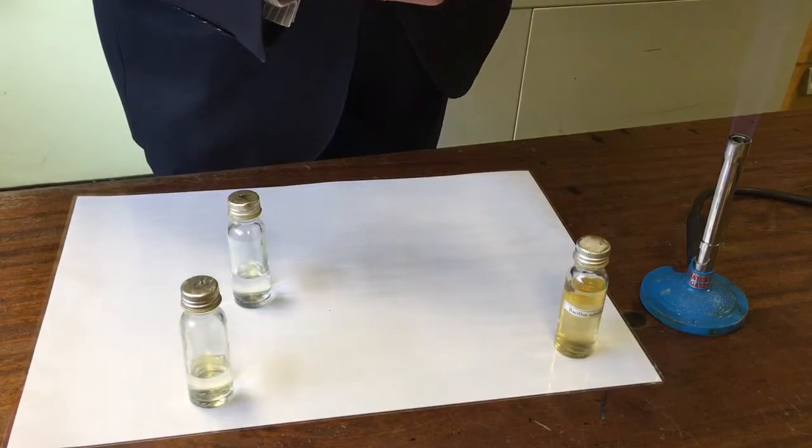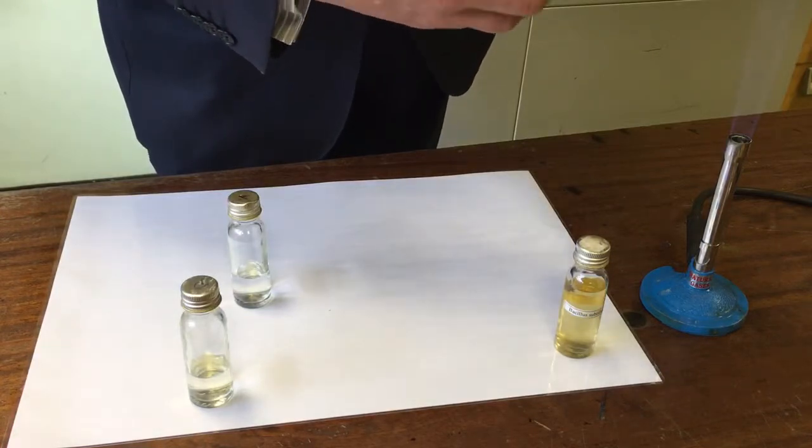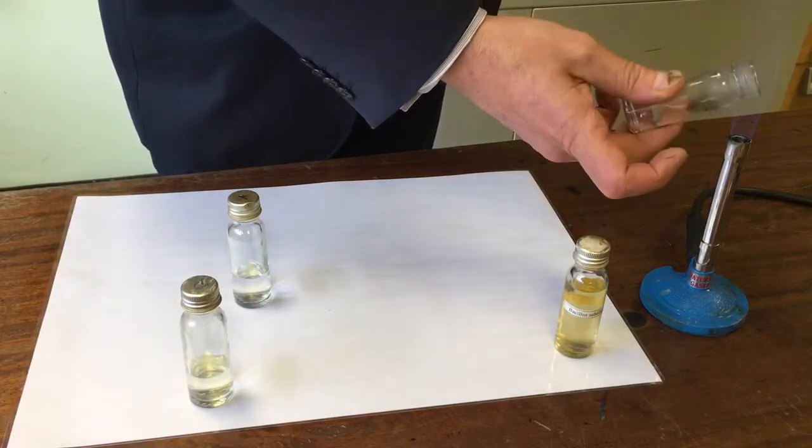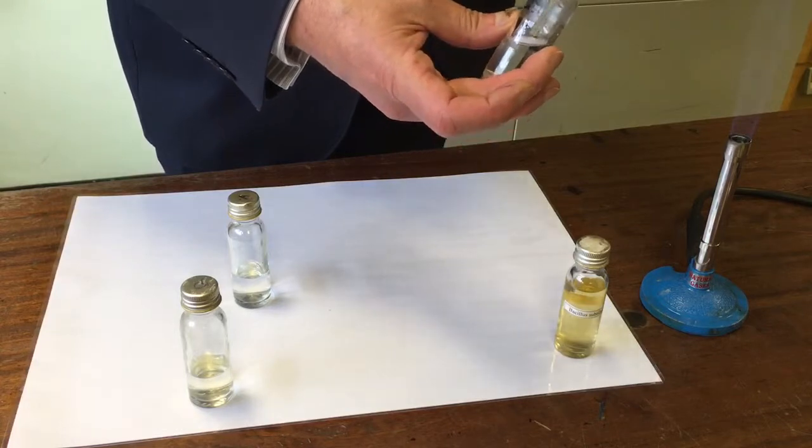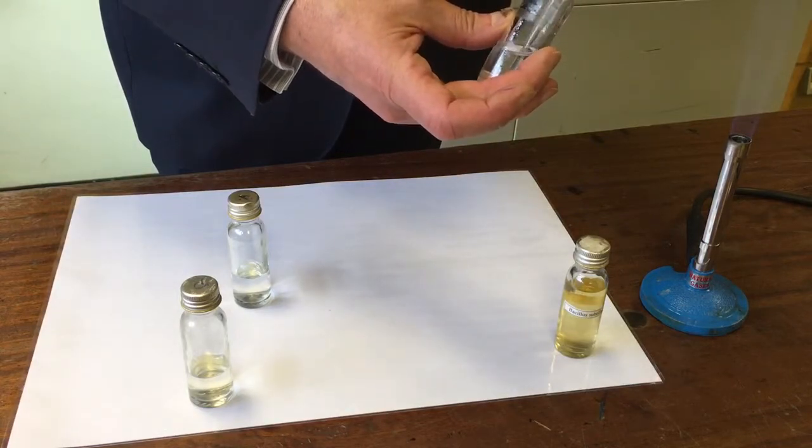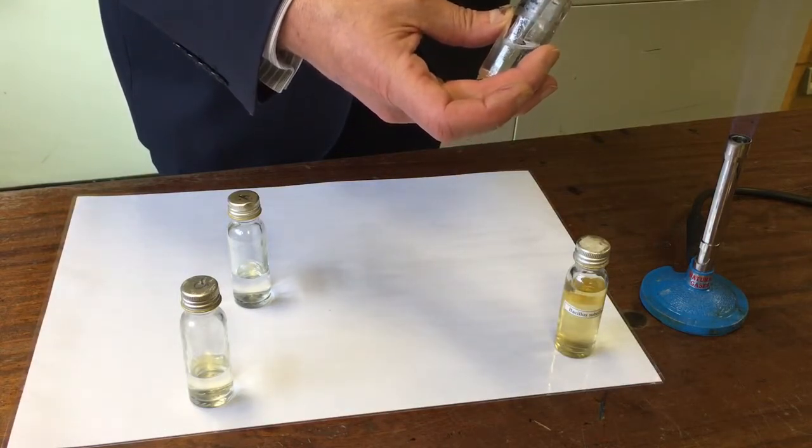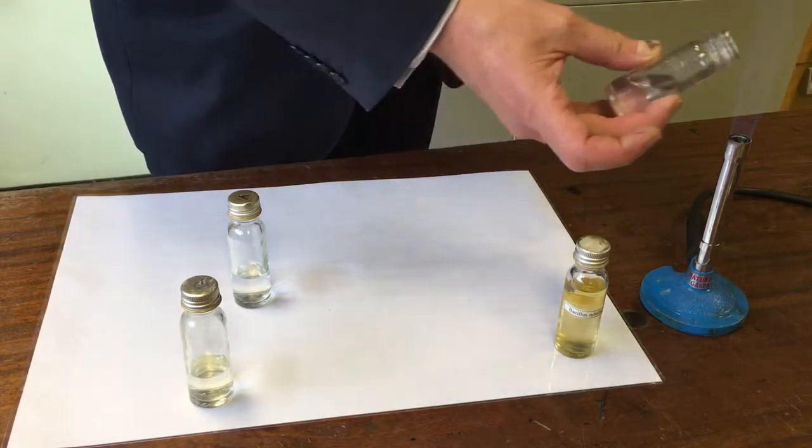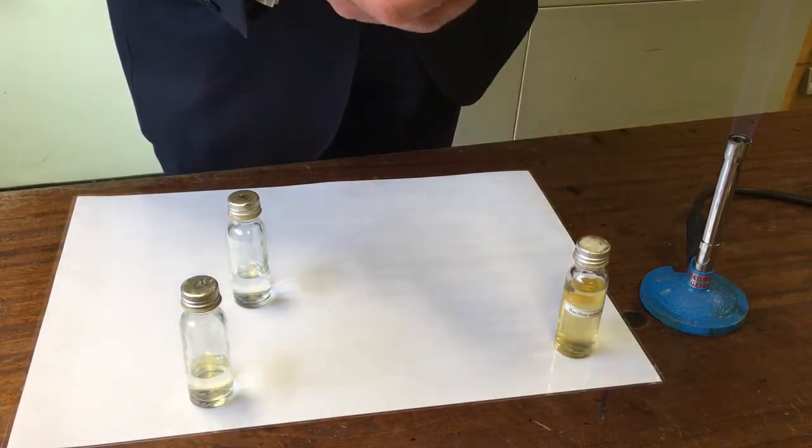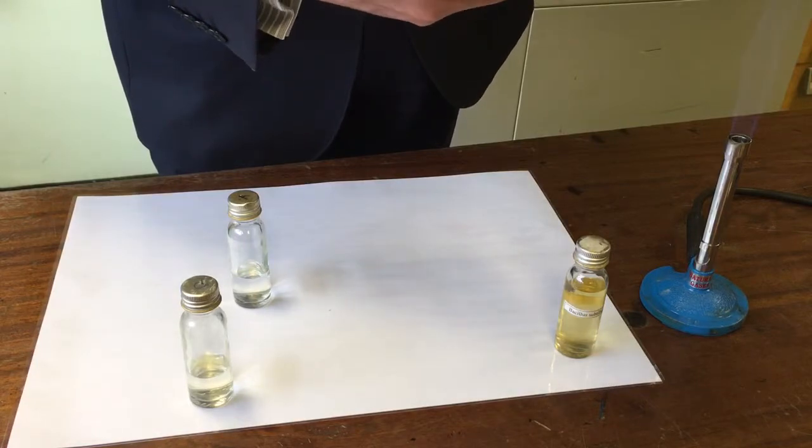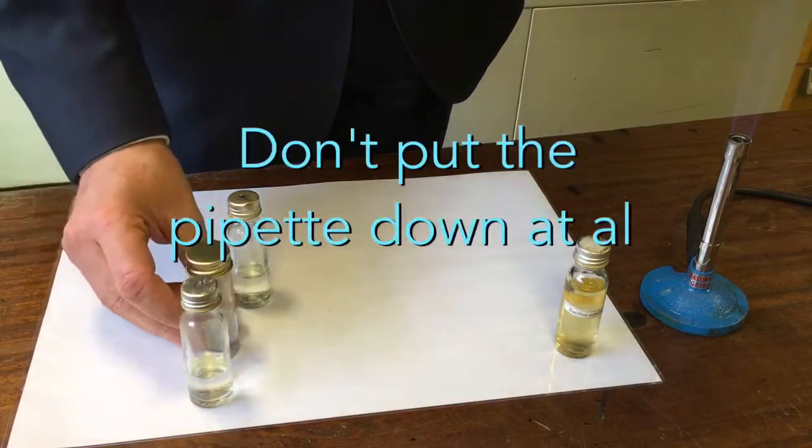I'll take this one milliliter I've drawn from that and put it into the second tube. Sterilize the mouth. Squirt it in. Mix it up. Draw up one centimeter cubed from this one. So I've diluted one in ten twice. So I've now diluted this by a hundred.